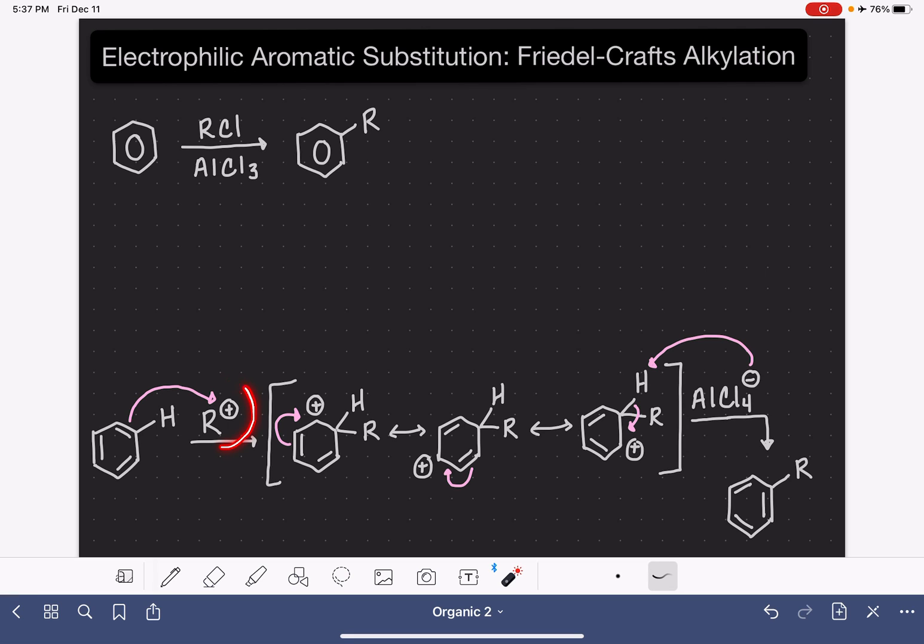In this reaction, the electrophile is a carbocation, the carbocation that came from the alkyl chloride. Double bonds from the benzene ring will attack that carbocation, form a bond, and connect that alkyl group to the benzene ring.